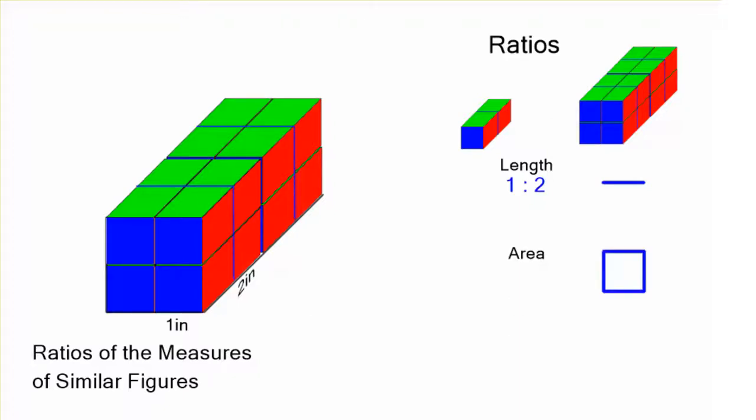The area is going to be 2 dimensional, and the ratio of the areas is 1 to 4. Look at the front face. In the little one it's 1 square, and on the larger figure, it's going to be 4 squares. There's 4 times as many little squares.